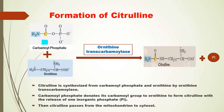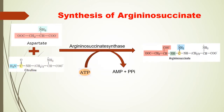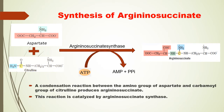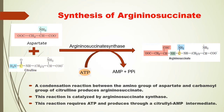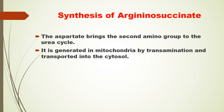Synthesis of argininosuccinate. A condensation reaction between the amino group of aspartate and the carbamoyl group of citrulline produces argininosuccinate. This reaction is catalyzed by argininosuccinate synthase. This reaction requires ATP and proceeds through a citrullyl-AMP intermediate. The aspartate brings the second amino group to the urea cycle. It is generated in the mitochondria by transamination and transported into the cytosol.